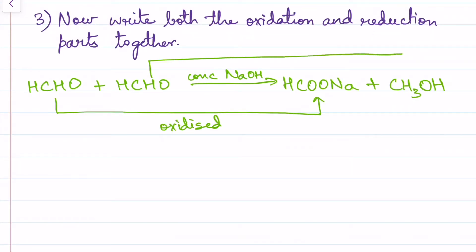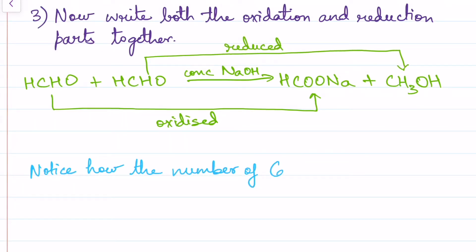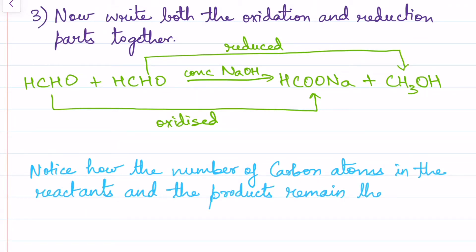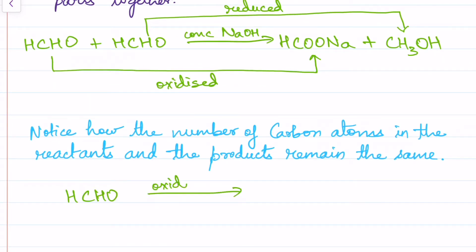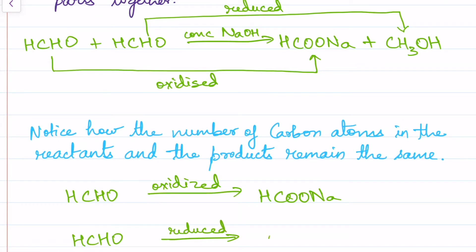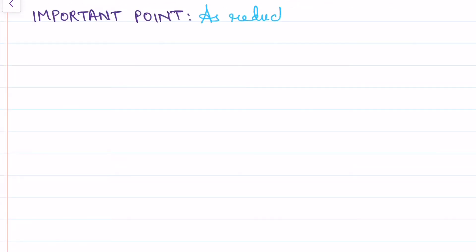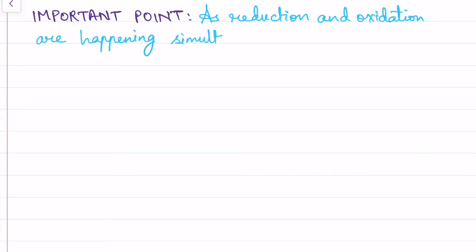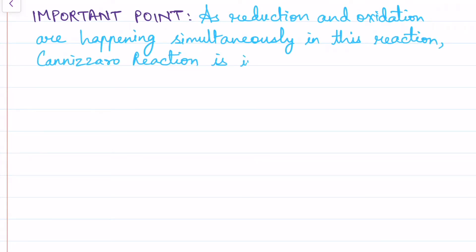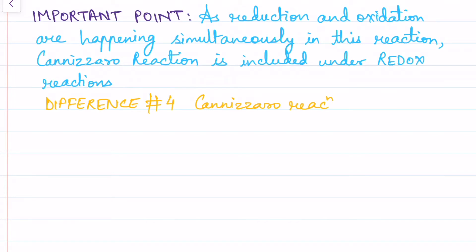One important thing to notice is that the number of carbon atoms in the reactant and in the products remains the same — we began with two carbon atoms in the two HCHO molecules and ended with two carbon atoms in the products. Also, since reduction and oxidation are happening simultaneously, Cannizzaro reaction is included under redox reactions. That is the fourth difference: while Cannizzaro reaction is a redox reaction, aldol is not.